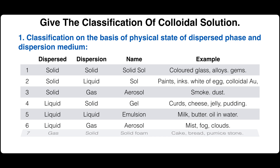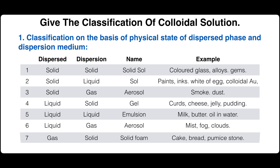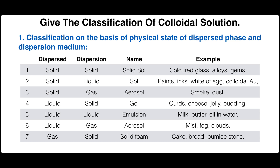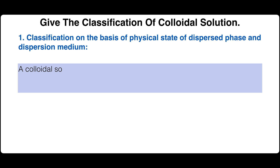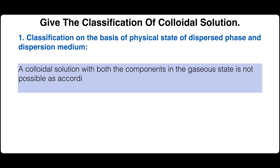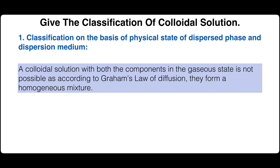When the dispersed phase is gas and the dispersion medium is solid, a solid foam is obtained; examples are cake, bread, and pumice stone. When the dispersed phase is gas and the dispersion medium is liquid, foam is obtained; examples are soap lather and aerated water. A colloidal solution with both components in the gaseous state is not possible, as according to Graham's law of diffusion they form a homogeneous mixture.